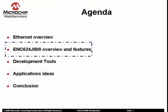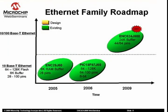Let's get started with a brief overview of ENC624J600 standalone Ethernet controllers. In the Ethernet Solutions Roadmap, our existing products include PIC Microcontroller plus Ethernet controller, PIC18F97J60, and the standalone Ethernet controller ENC28J60. The ENC624J600 is a new standalone Ethernet controller which is IEEE 802.3 compliant, combining 10/100BaseT PHY and MAC with hardware cryptographic security engines, and can connect to any microcontroller via an industry-standard serial peripheral interface or a flexible parallel interface.